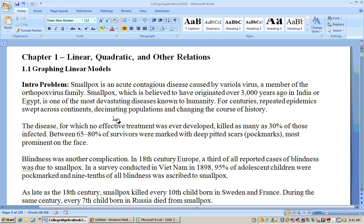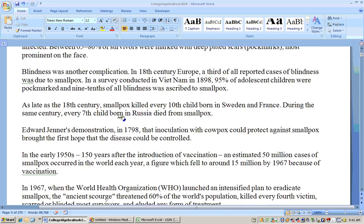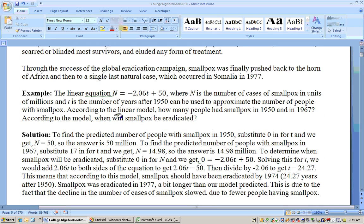On this introduction problem, it gives you how smallpox was eradicated. It gives you some data here, and then finally at the end of the page, it gives you a linear equation for the number of people that had smallpox at any given year. T is usually our independent variable or variable that's playing the role of X, and the variable on the other side is usually playing the role of Y. If you see an equation that has any letter in T, then T is definitely playing the role of X as your horizontal axis. T on this stands for number of years, as in time, after 1950.